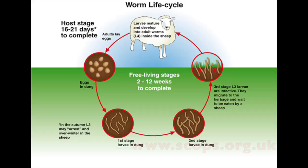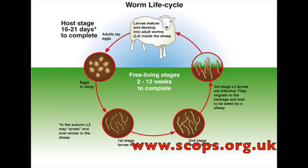Tapeworms have a slightly more complex life cycle than nematodes or roundworms. Roundworms have a very simple life cycle in which they transfer between the sheep and the environment and back to the sheep. In contrast, tapeworms cycle between two different hosts. One of these hosts is known as the definitive host, and that is the host in which you find the adult form of the parasite.